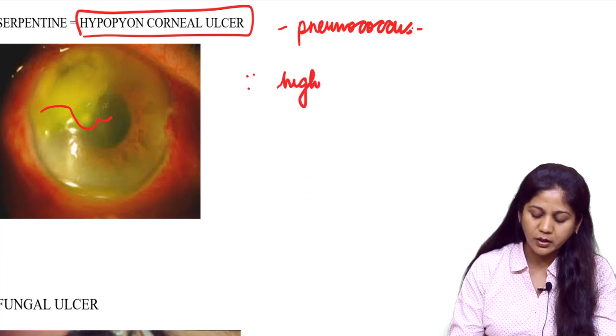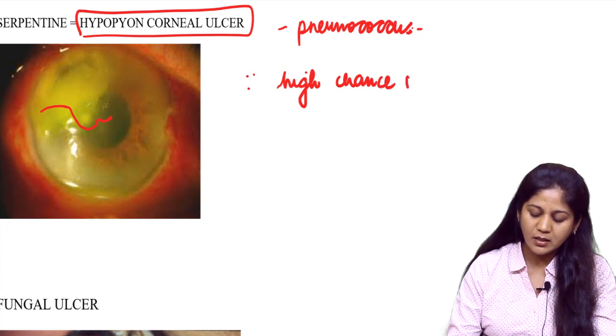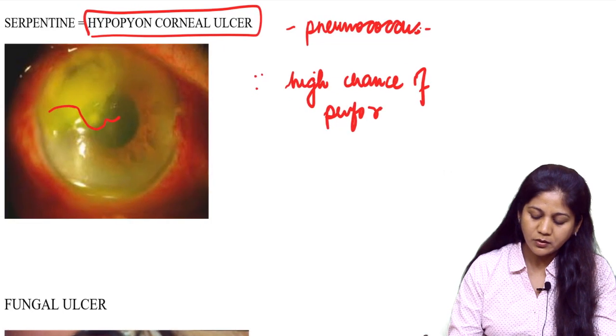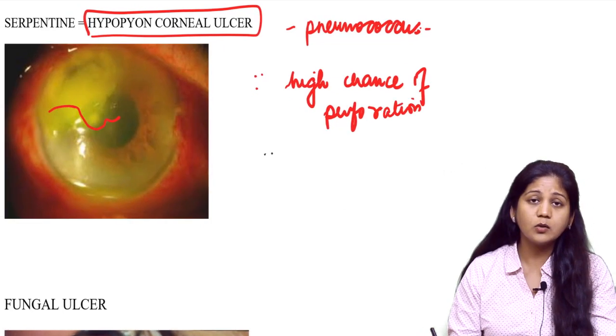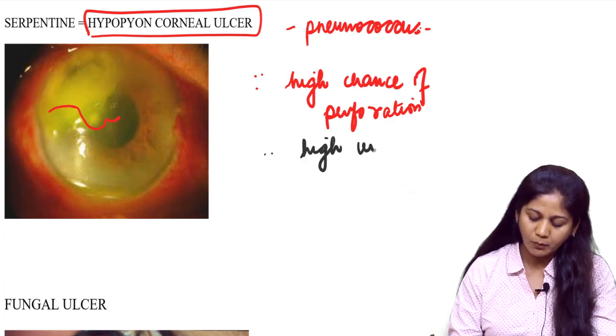These are very dangerous ulcers with a high chance of perforation. Another important feature is that this ulcer is associated with a very high amount of inflammation and uveitis of the anterior segment.